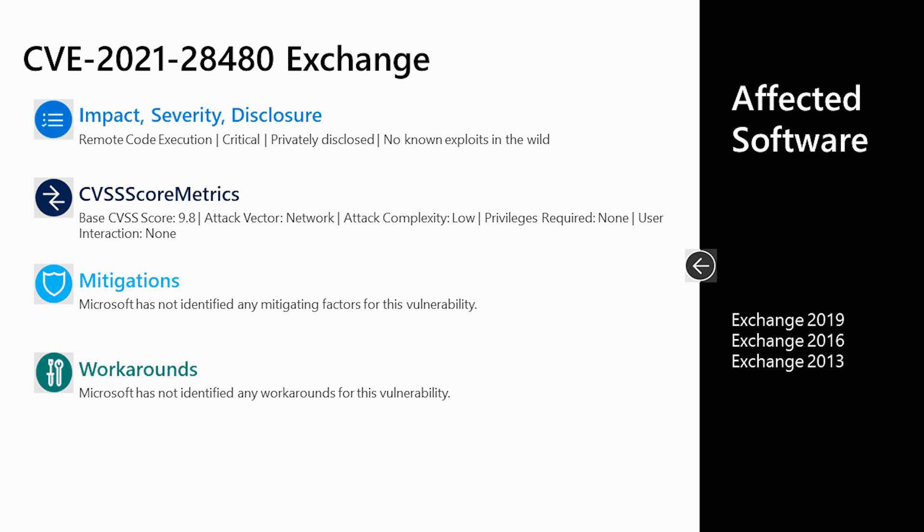There are actually four vulnerabilities with Exchange this month. Two are rated at 9.8, one is rated at 9.0, and one is rated at 8.8. The key point is that CVE-2021-28480 requires no privileges and no user interaction, and it's a 9.8 on a scale of 10. This should encourage you to update as soon as possible. There are no workarounds or mitigations known for this — you need to install the updates and then you'll be protected.